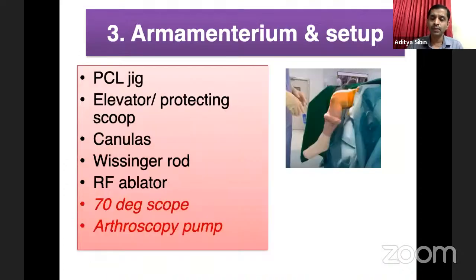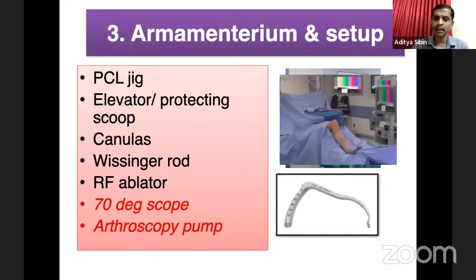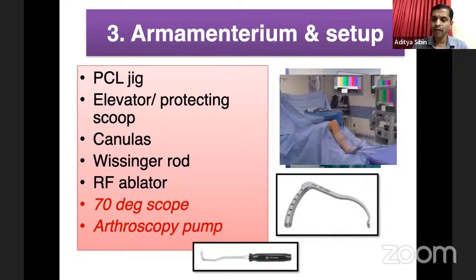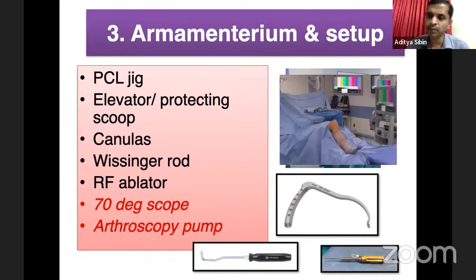Once the diagnosis is confirmed, proceed to setup. PCL can be done in either the hanging position or at 90-degree position. More important than position is proper armamentarium: apart from the PCL jig, you should have an elevator or protective jig, and ideally shoulder arthroscopic instruments like the Wissinger rod, cannulas, and radiofrequency device. These make surgery much easier. Having a 70-degree scope is a bonus. An arthroscopic pump can be used, though elevation of normal saline is usually sufficient.